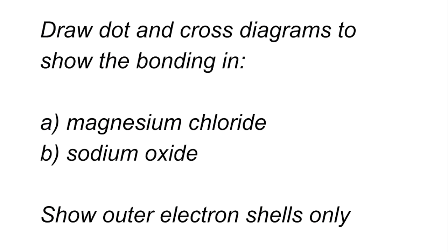So we'll finish with a typical exam-style question on ionic bonding. So you can see there it's written, draw dot and cross diagrams to show the bonding in magnesium chloride and sodium oxide. And we need to show outer shell electrons only. So if you want to have a go at that, pause the video and then play on for the answer.